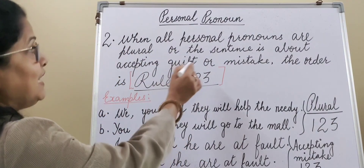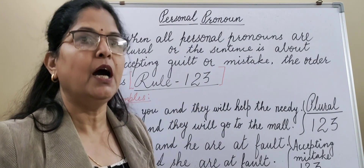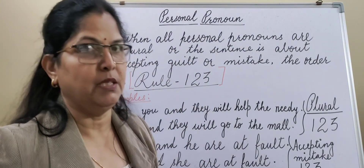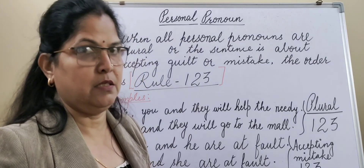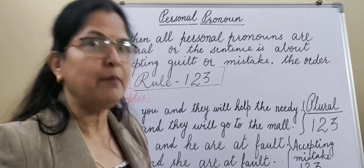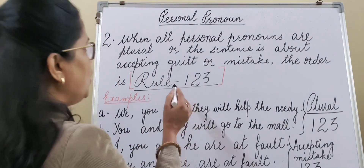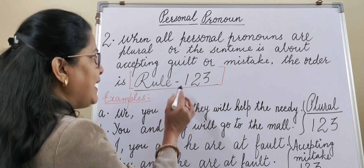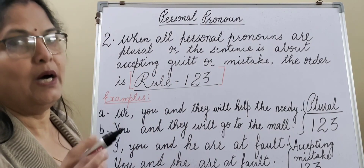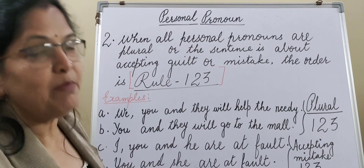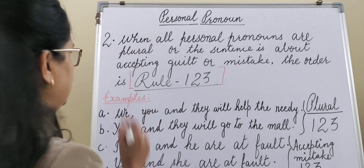So remember: when personal pronouns are plural, use Rule 123. And also, when in a sentence we are accepting our shortcomings, our guilt, our fault, or our weaknesses, in that condition also we arrange the pronouns according to Rule 1-2-3. Let's understand with a couple of examples.